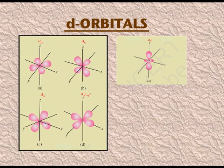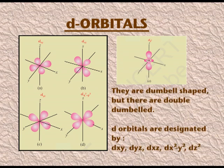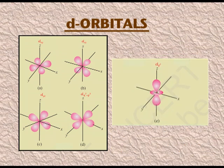The d orbitals — there are five types. Again they are dumbbell shaped, but there are double dumbbells. They are designated as dxy, dyz, dxz, dx²−y², and dz². You can see a very clear picture of the d orbitals. In the first three d orbitals, the dumbbells are bisecting the respective axes. But in dx²−y² and dz² orbitals, the dumbbells are along the axes. Specifically in dz², it is just like the p orbital but in the centre there is a donut shape.